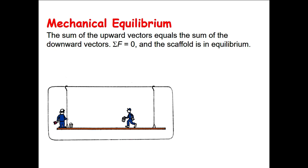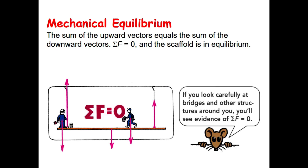The reason for this is that all forces cancel out. In the downward direction, we have three forces: the weights of the two men and the scaffold, due to gravity. In the upward direction, we have two forces — the tensions in the two ropes holding the scaffold. Because this system is in equilibrium, the sum of all forces is zero — the net force is zero.